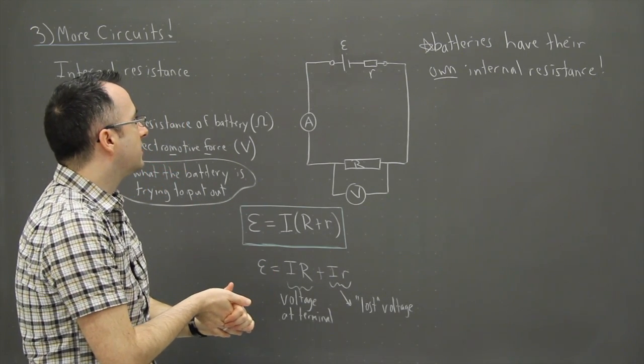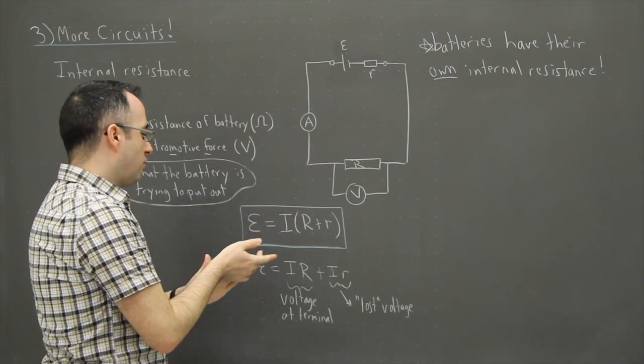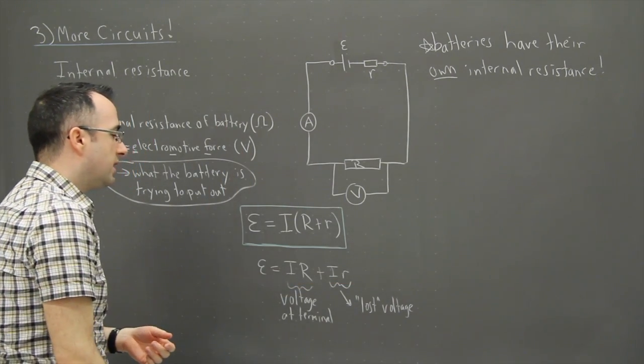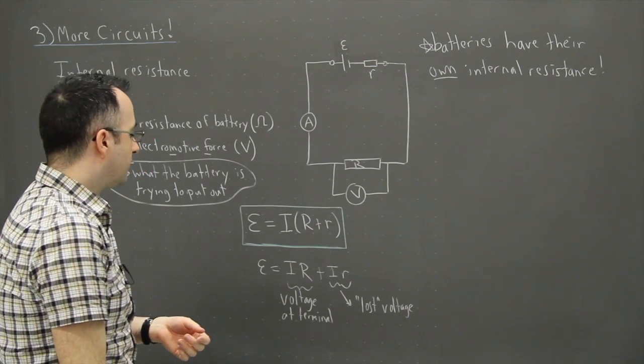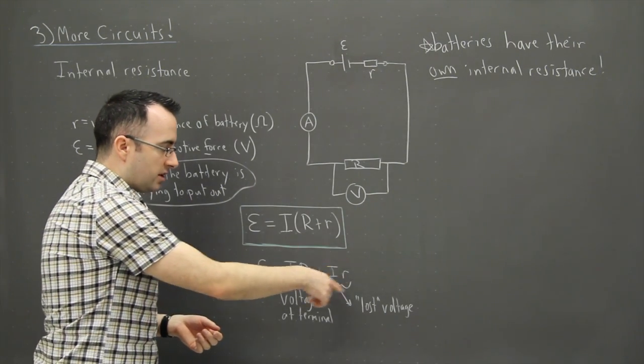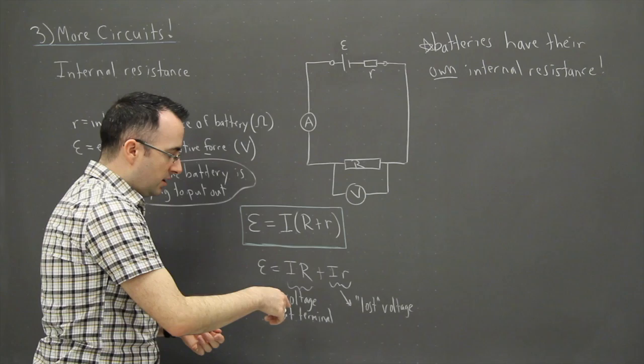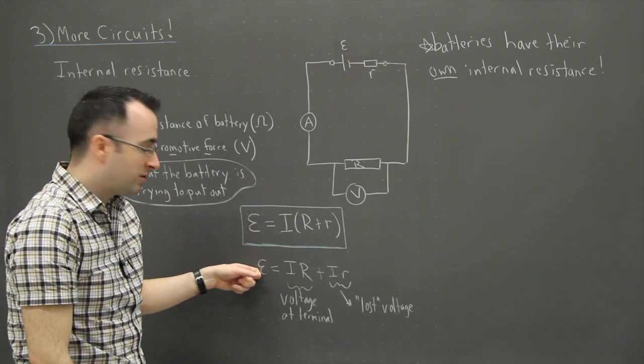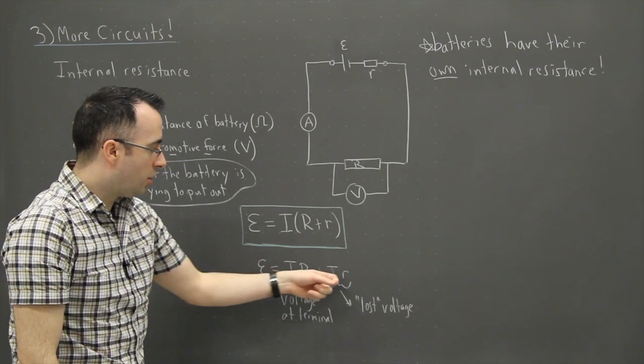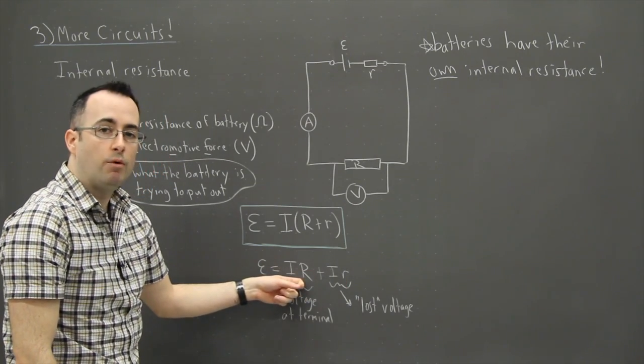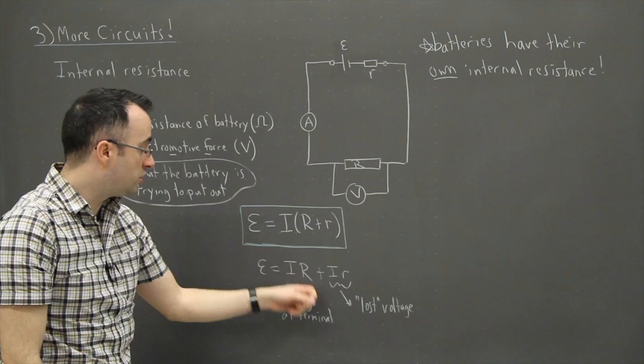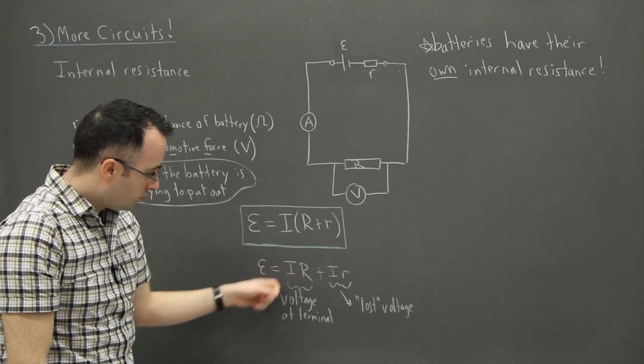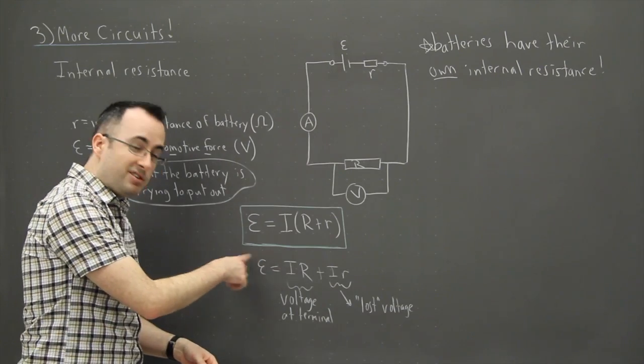That's the only stuff you can really use. I like to think of it as this is like what it's trying to put out, and then you have sort of like a lost voltage here. If you lost 1 volt and this is actually supposed to be a 5-volt battery, it's trying to put out 5 volts, and if it lost 1, well then this is obviously 4. This is the usable voltage, this IR, the usable voltage.